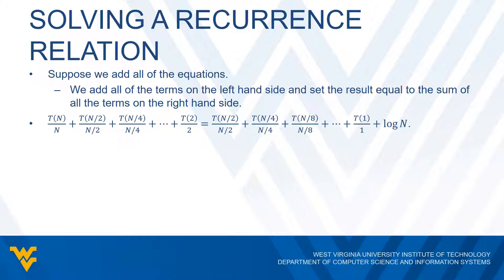Now let's suppose we decide to add up all the equations — taking all the terms on the left side and adding them up, and all the terms on the right side and adding them up. What we get is something like this. On the left side we have T(N)/N, T(N/2)/(N/2), and so forth. On the right side we sum all the right-hand terms. Since we're dividing by two each time, we have log N equations total, and in every equation there's a plus one, so the sum of all those ones is just log N.